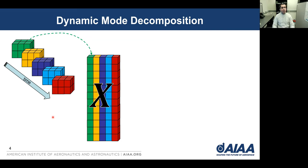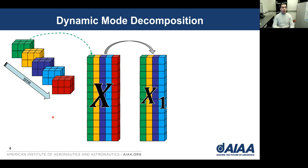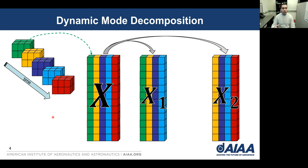We can split this matrix into two parts. The first part is similar to X but without the last snapshot, and the second part is the same as X but without the first column. So we can consider X2 as one time step ahead of X1.